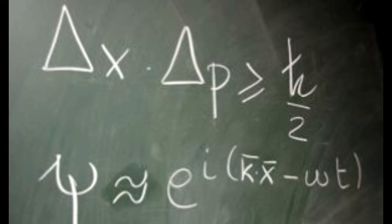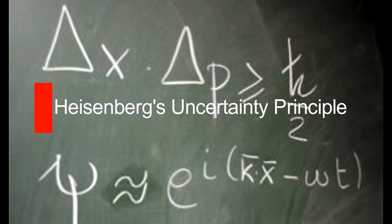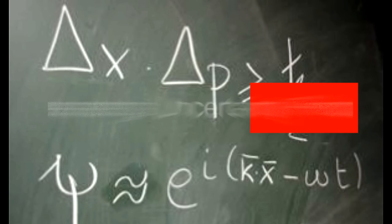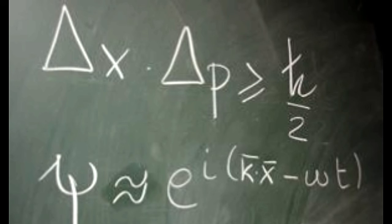Heisenberg's uncertainty principle. The more precisely the position is determined, the less precisely the momentum is known in this instant, and vice versa. Werner Heisenberg. In its most non-nerdy version, it states you cannot know the position of a particle and how fast it's moving with arbitrary precision at the same moment. Or, it is fundamentally impossible to simultaneously know the position and momentum of a particle at the same moment with arbitrary accuracy.